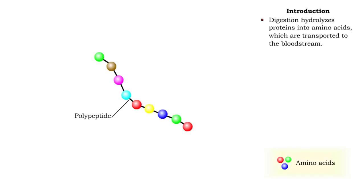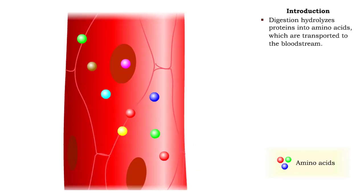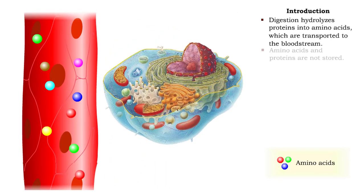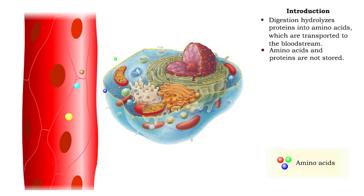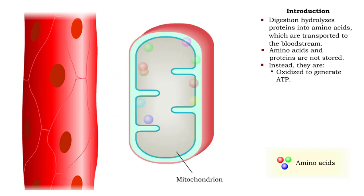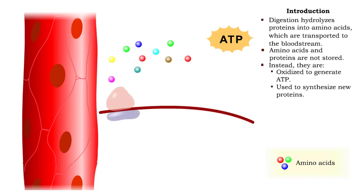During digestion, proteins are hydrolyzed into amino acids and transported to the bloodstream. Unlike carbohydrates and triglycerides, amino acids and proteins are not stored. Instead, they are oxidized to generate ATP and used to synthesize new proteins.